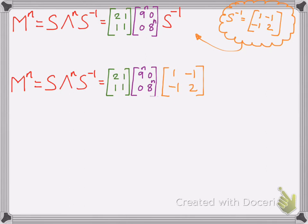And now all you've got to do is multiply across. So multiply these two matrices first. You should get 2 times 9 to the nth, 8 to the nth, 9 to the nth, 8 to the nth. Then you've still got your S inverse.